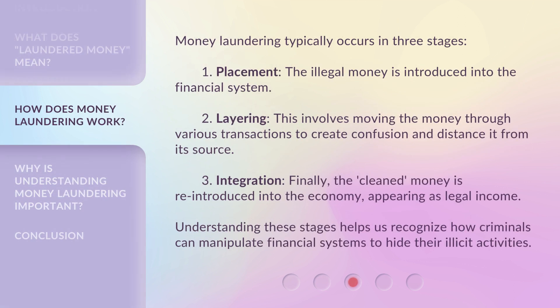Money laundering typically occurs in three stages. First, Placement: the illegal money is introduced into the financial system. Second, Layering: this involves moving the money through various transactions to create confusion and distance it from its source. Third, Integration: the cleaned money is reintroduced into the economy, appearing as legal income. Understanding these stages helps us recognize how criminals can manipulate financial systems to hide their illicit activities.